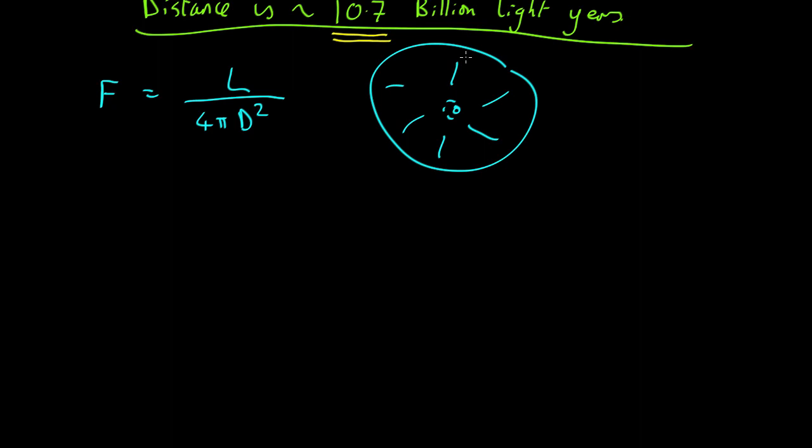But in cosmology, when space is expanding, there are two additional effects. First of all, each photon as it travels gets stretched into a longer photon, which means its energy goes down. So the energy of each photon is proportional to 1 over 1 plus the redshift, so to the scale factor. As the scale factor gets bigger, the energy goes down.